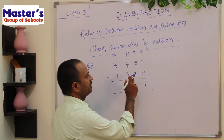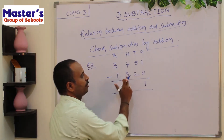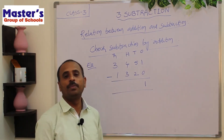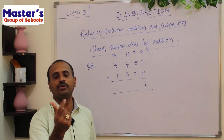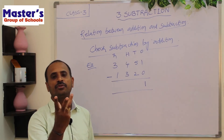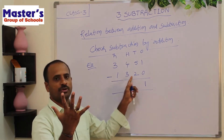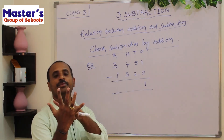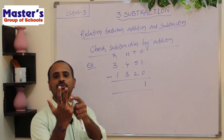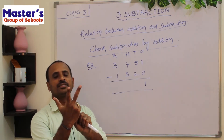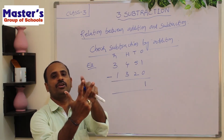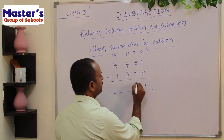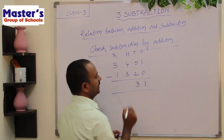Now go to tens place. 5 and 2 are present there. Open 5 fingers, close 2 fingers: 1, 2. There are remaining 3 fingers. Write 3 under tens place.